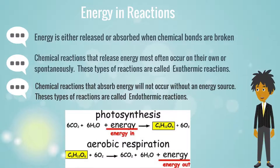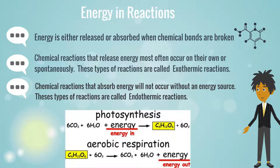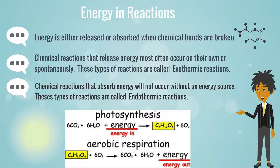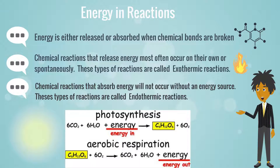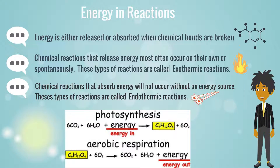Energy is either released or absorbed, and chemical bonds are broken. Chemical reactions that release energy most often occur on their own, or spontaneously — these are called exothermic reactions. Chemical reactions that absorb energy will not occur without an energy source — these are called endothermic reactions.